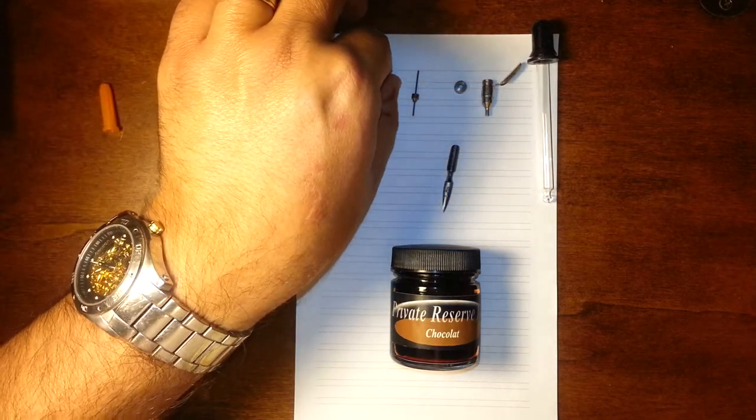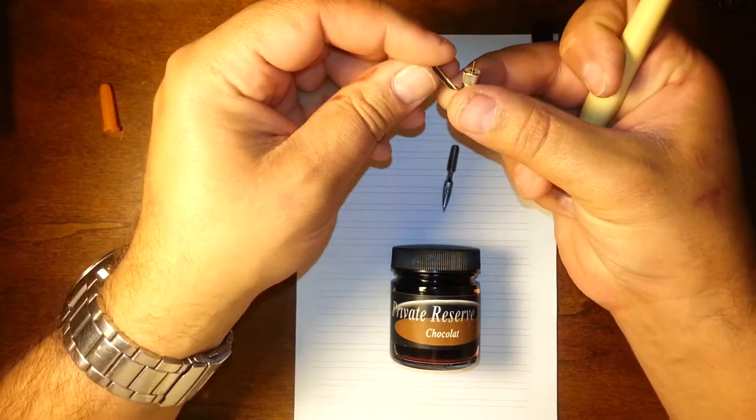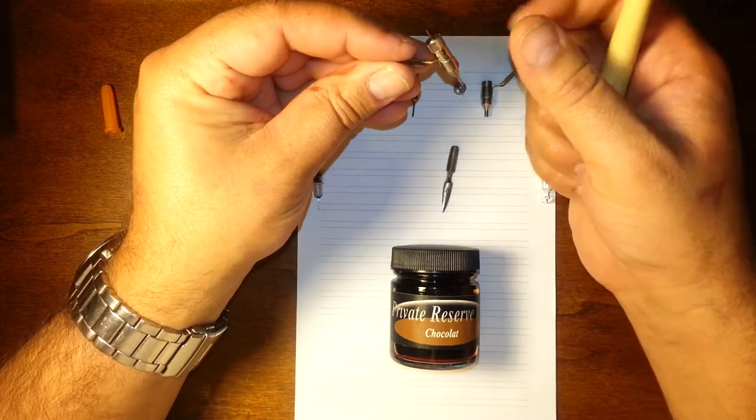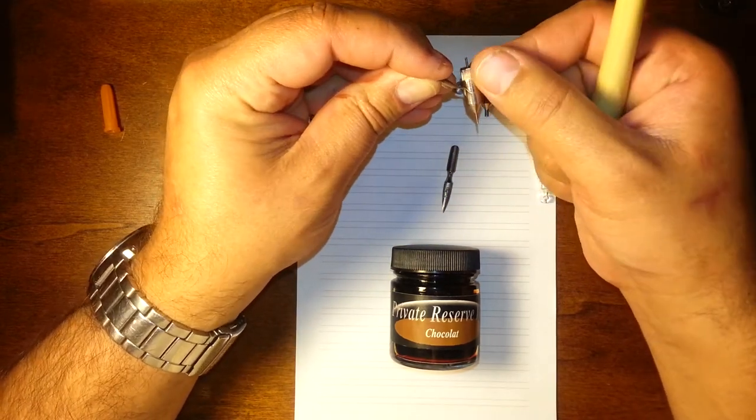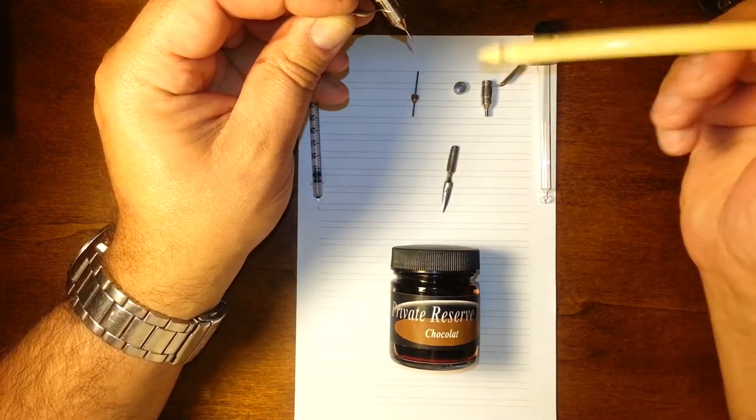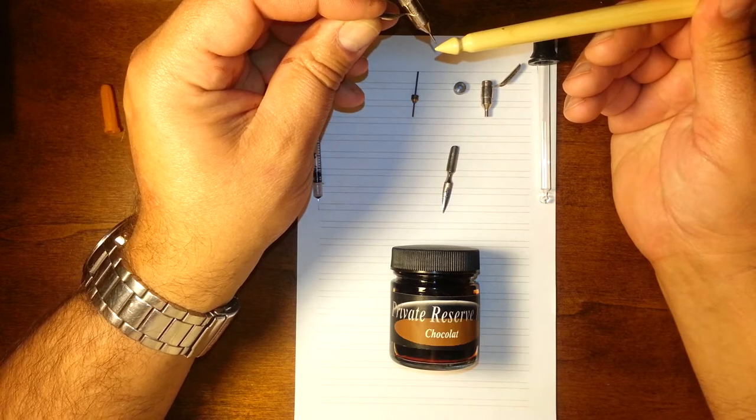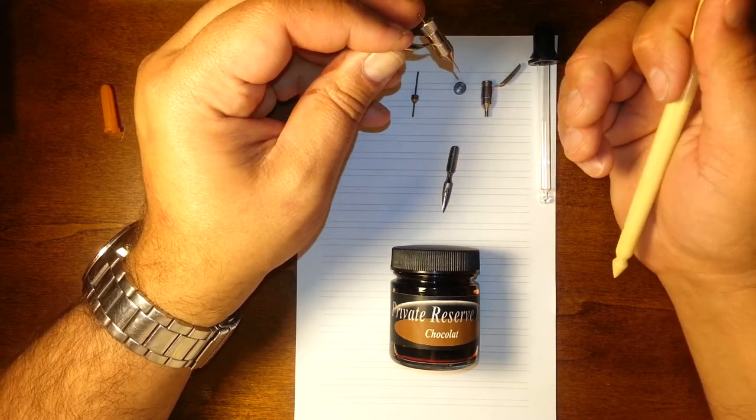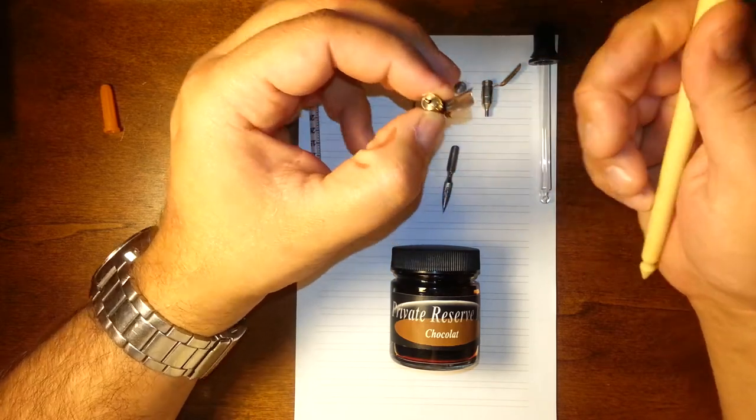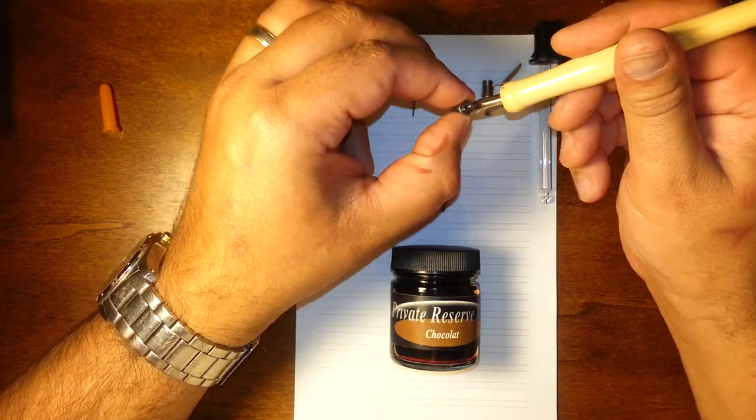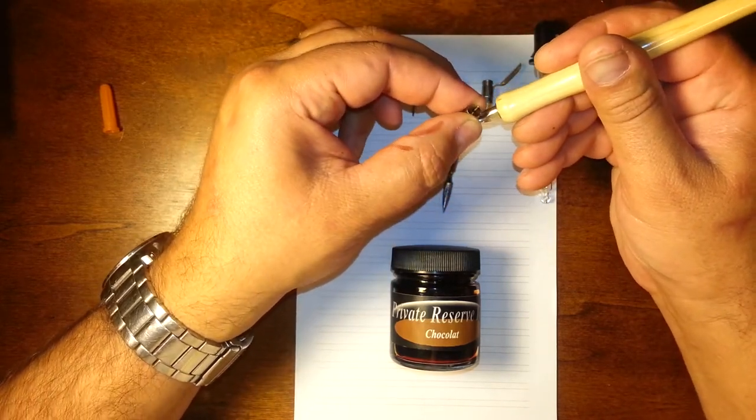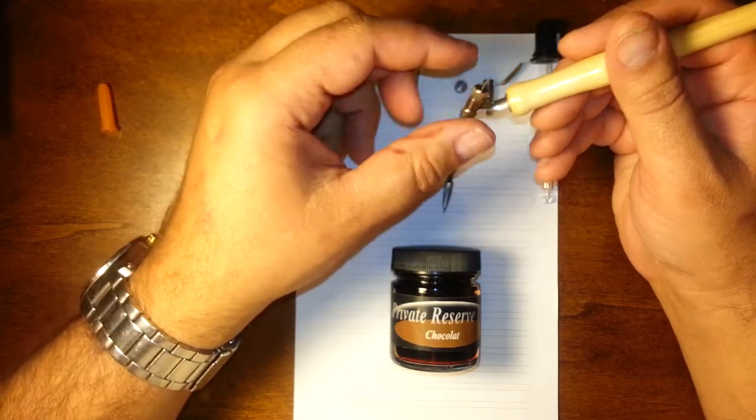I thought at the time that maybe these were an early version of a mechanical pencil. That maybe this screwed down and attached to a lead sticking out here and allowed you to use a mechanical pencil in a dip pen.